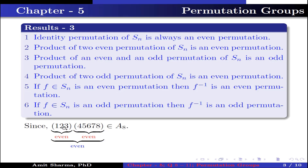The product of permutations (1,2,3) and (4,5,6,7,8) belongs to A8. Why? Because (1,2,3) is an odd cycle length, so it is an even permutation. (4,5,6,7,8) is again an odd cycle length, so it is also an even permutation. The product of two even permutations is an even permutation, and in the alternating group only even permutations are present.